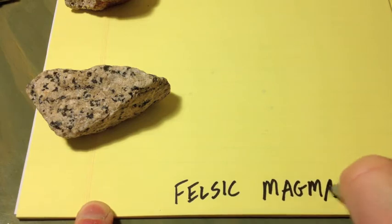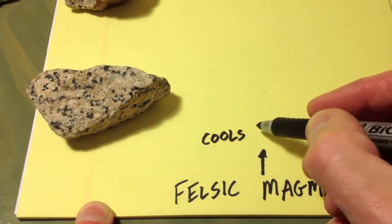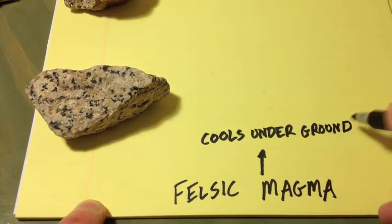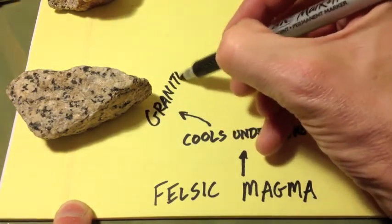Now, the felsic, the lightest color, lowest density, highest silica magma. When it cools underground, we get good old granite. Coarse-grained, light-colored.